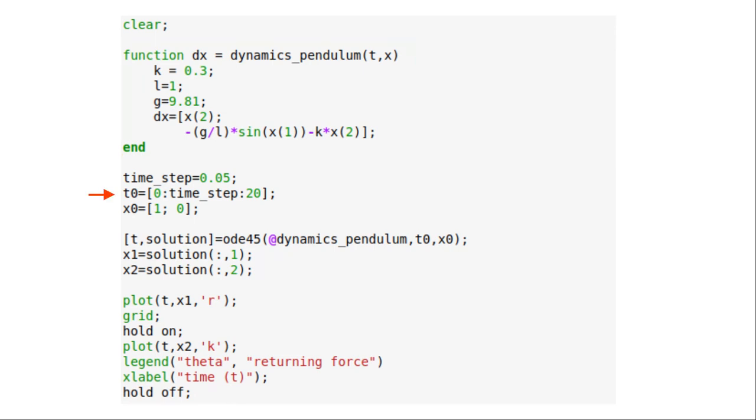We must define the independent variable. We take time to be the independent variable. x0 is the initial condition vector. You then pass the function of equations, the independent variable, and the initial conditions to the ODE45 method.